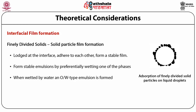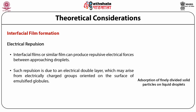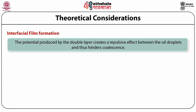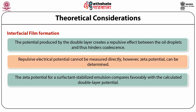Finely divided solids when exposed to the interface generate a solid particle film. These particles are lodged at the interface and adhere strongly to each other, forming a stable film at the surface. They form stable emulsions by preferentially wetting one of the phases. When wetted by water, the contact angle is less than 90 degrees and oil-in-water emulsions are generated; when wetted by oil, a water-in-oil emulsion results. Interfacial films can produce repulsive electrical forces between approaching droplets due to an electrical double layer, and zeta potential can be determined for surfactant-stabilized emulsions.